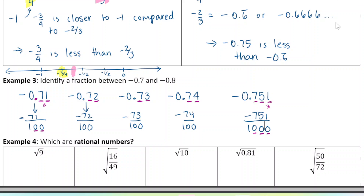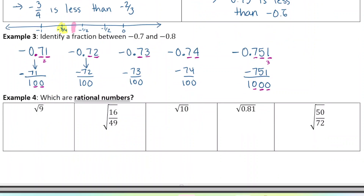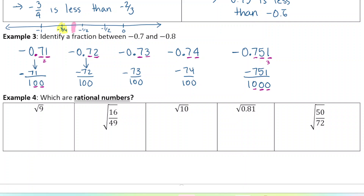Finally, let's classify rational numbers — figure out which of these numbers are rational and which are not. Some numbers actually cannot be written as a fraction. The first one: square root of 9. Square root is asking what times what equals 9. Since 3 times 3 equals 9, the square root of 9 is 3. And 3 can be written as a fraction, so this one is rational.